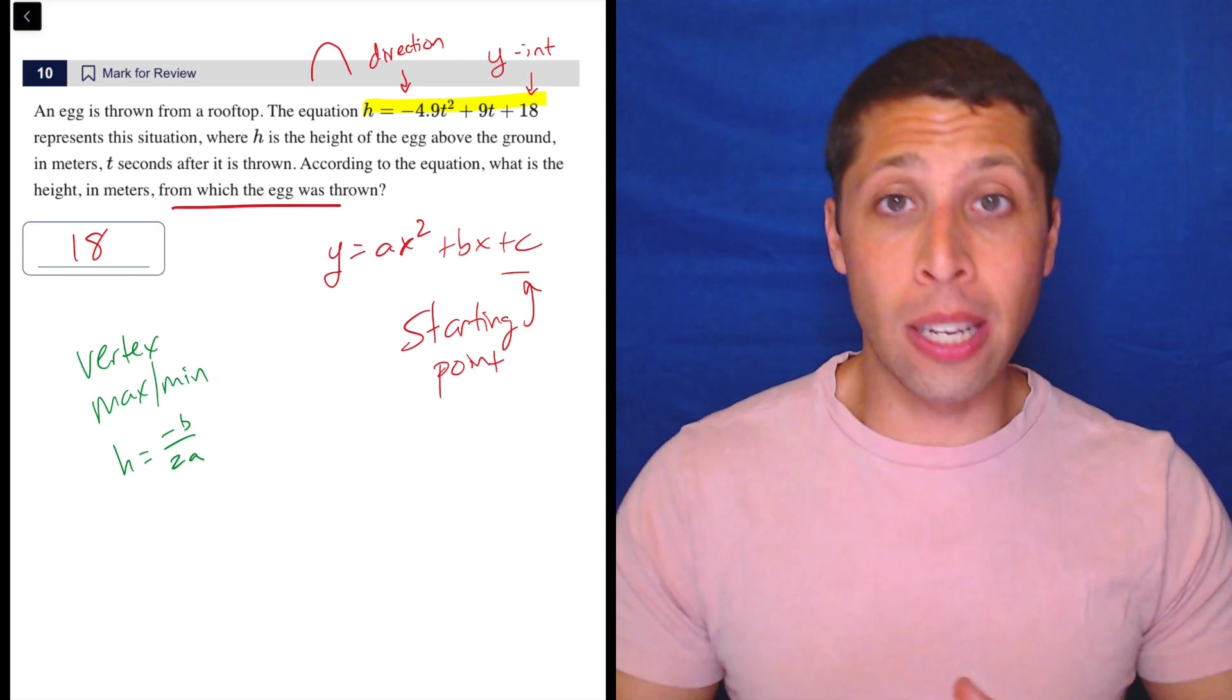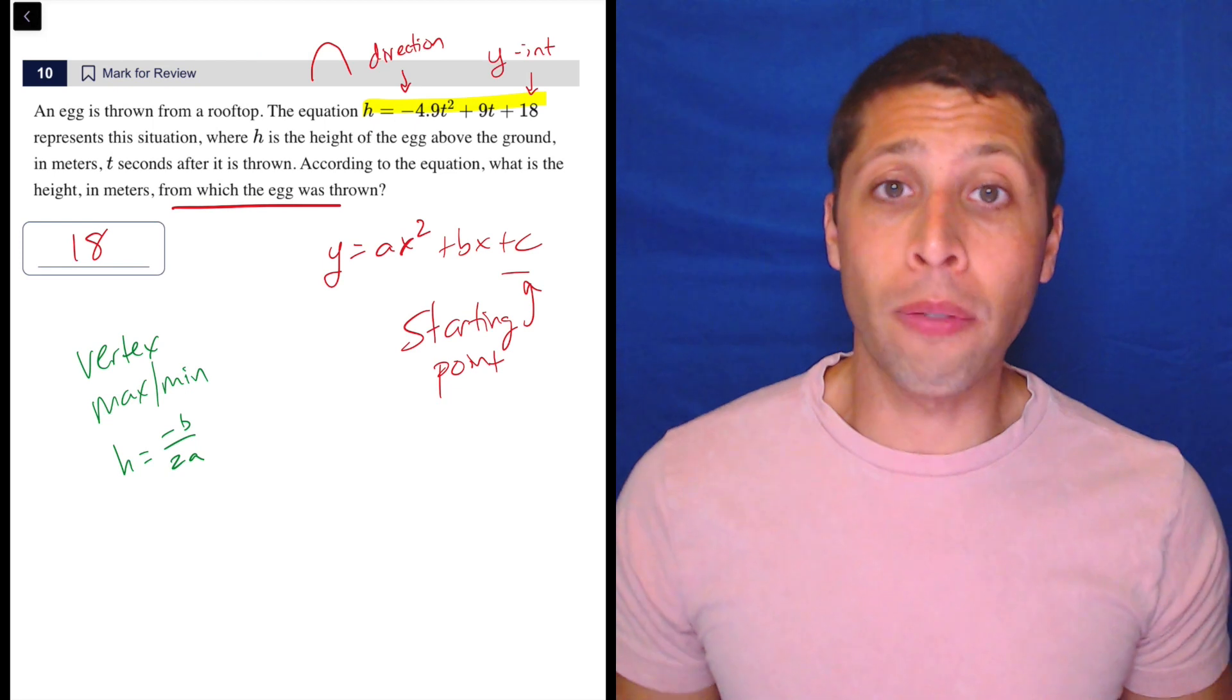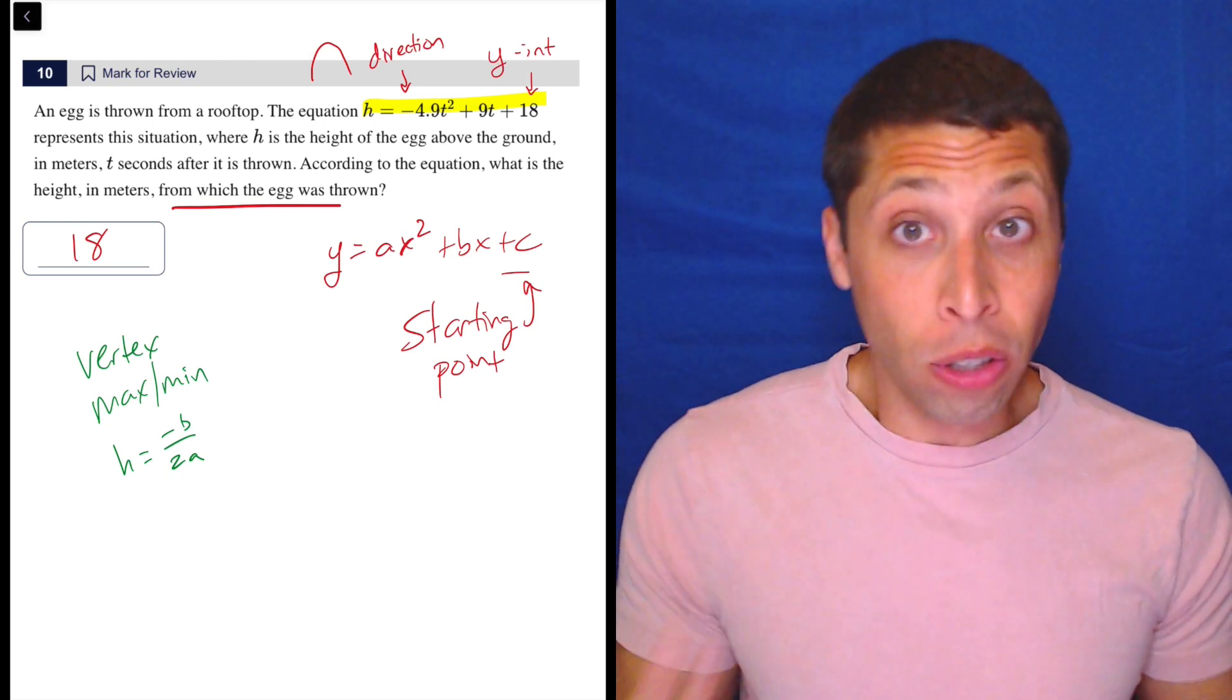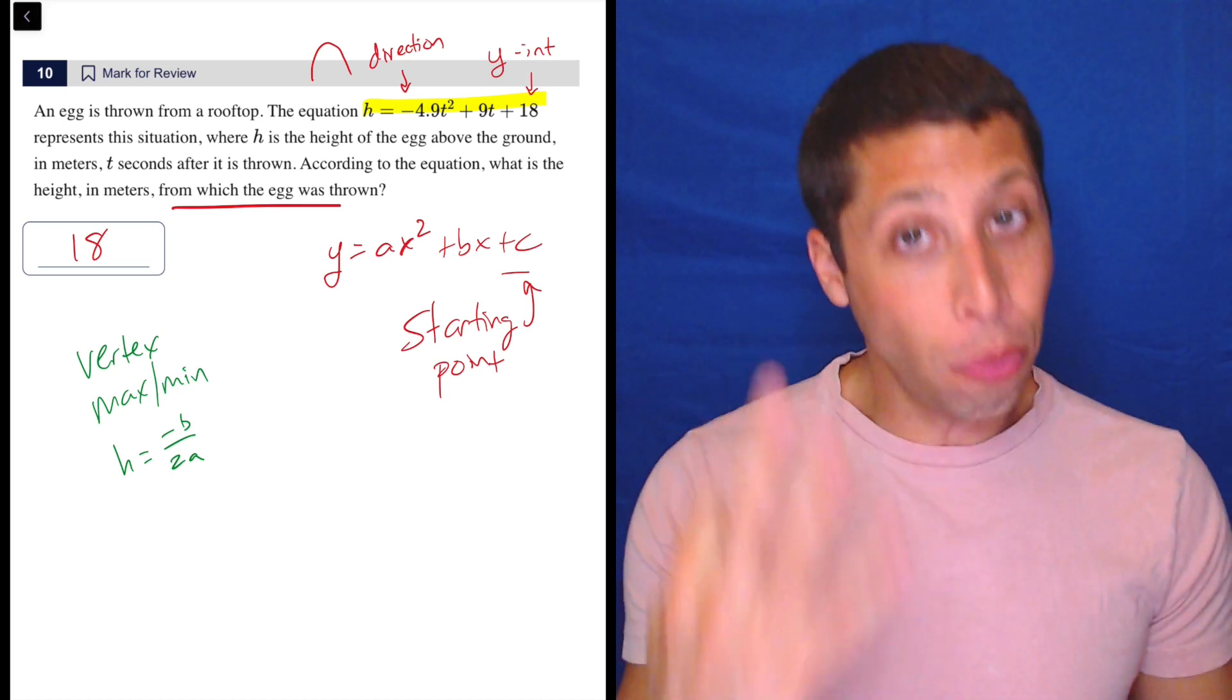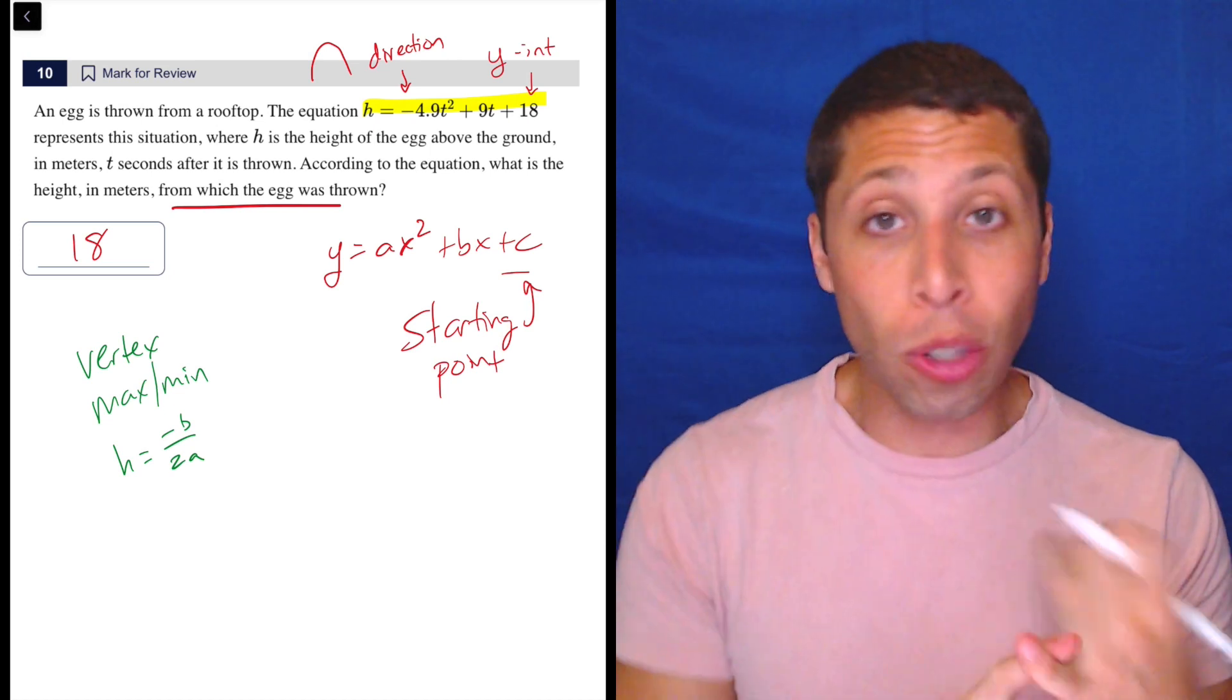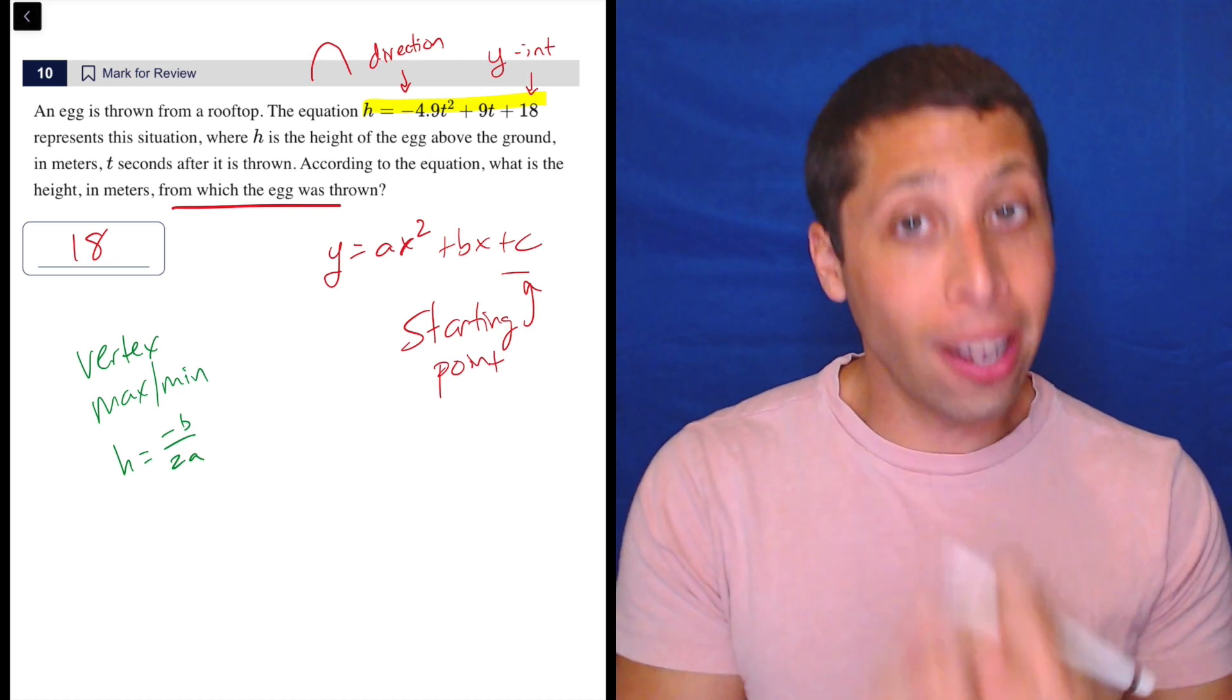So, this question, as much as it's a story, is really about knowing the vocabulary around quadratic equations. And so, that starts with the equations themselves. There are three ways that we can present a quadratic equation, and we need to be able to instantly recognize which one we're given and what it tells us.